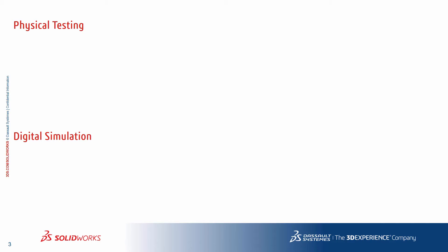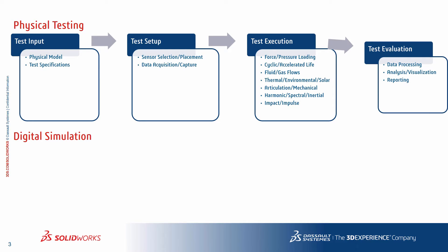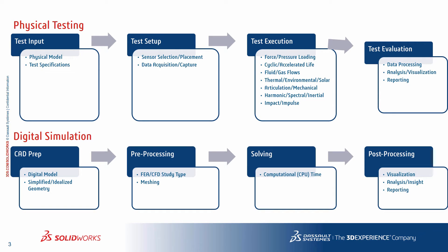When we examine the process of physical testing, it's very similar to that of simulation, whether it's FEA or CFD. We always start with the input. The input is either going to be the physical prototype or the CAD model, and it's going to be somehow prepared for the test. In the CAD world, that means simplifying the geometry. In the real world, that means creating the fixturing that's going to restrain the part.